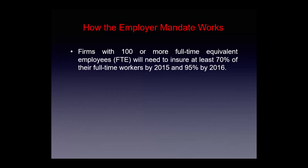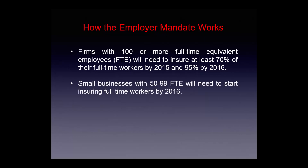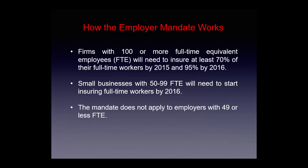Firms with 100 or more FTEs will need to insure at least 70% of their full-time workers by 2015 and 95% by 2016. Small businesses with 50 to 99 FTEs will need to start insuring full-time workers by 2016. This mandate does not apply to employers with 49 or fewer full-time equivalent employees.